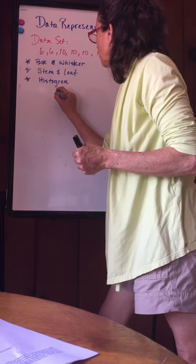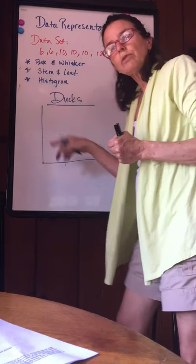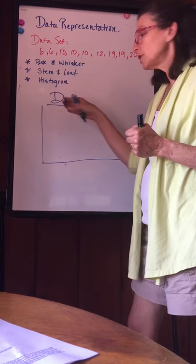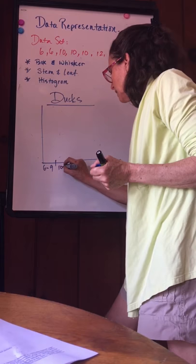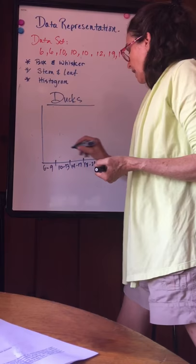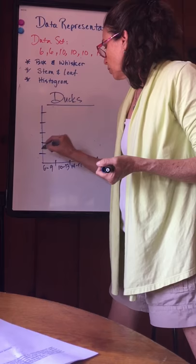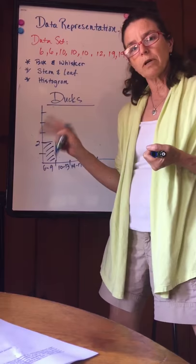Histogram. We're gonna have a nice title. Let's go ducks. Then we are going to represent our data with rectangles and we're going to do it in ranges instead. I'm not going to have a rectangle for each value. My first rectangle is going to represent the occurrence of 6 to 9 ducks and then 10 to 13, 14 to 17, and 18 to 21. So 6 to 9 I get to go up to 2. I saw 2 days where I saw 6 to 9 ducks.